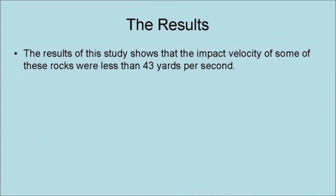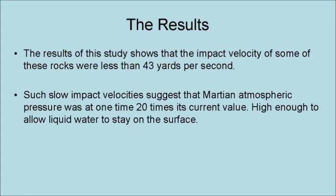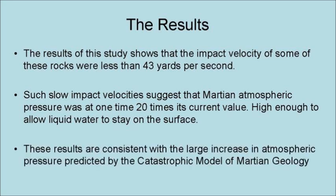The results of the study show that the impact velocities of some of the rocks were less than 43 yards per second. Such slow impact velocities suggest that the Martian atmospheric pressure was at one time 20 times its current value, high enough to allow liquid water to stay on the surface. These results are consistent with the large increase in atmospheric pressure predicted by the catastrophic model of Martian geology.